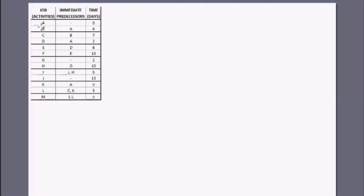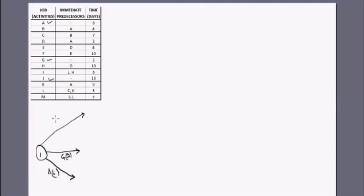We have 13 activities starting from A up to M, with their predecessors and durations given. Let's see which activities we can start straight away at time zero — it is activity A, G, and J. At the first node, node 1, we start with activity A (six days), activity G (two days), and activity J (thirteen days).